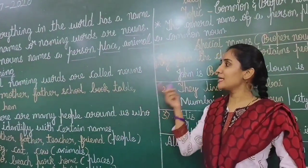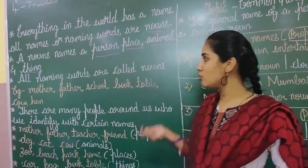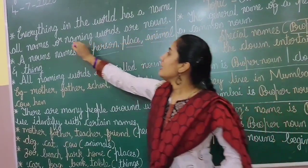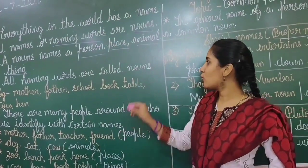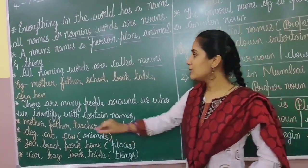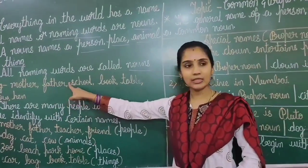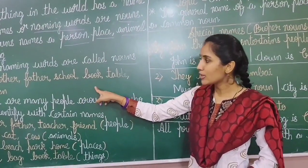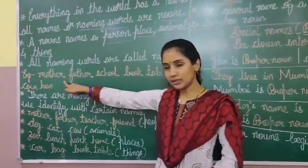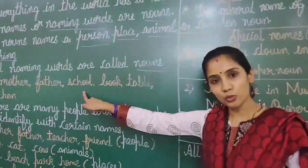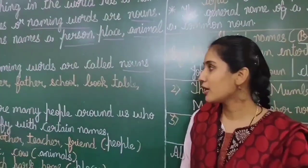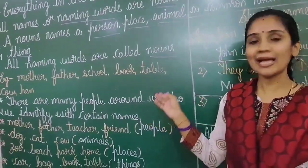All naming words are called nouns. For example: mother, father, school, book, table, cow, hand — all these are naming words and we call them nouns.